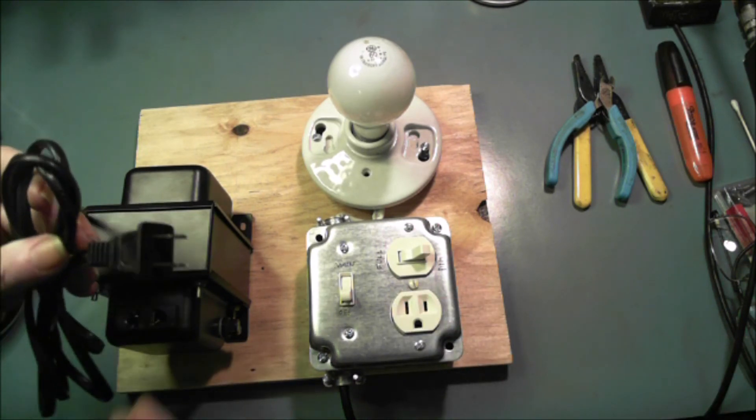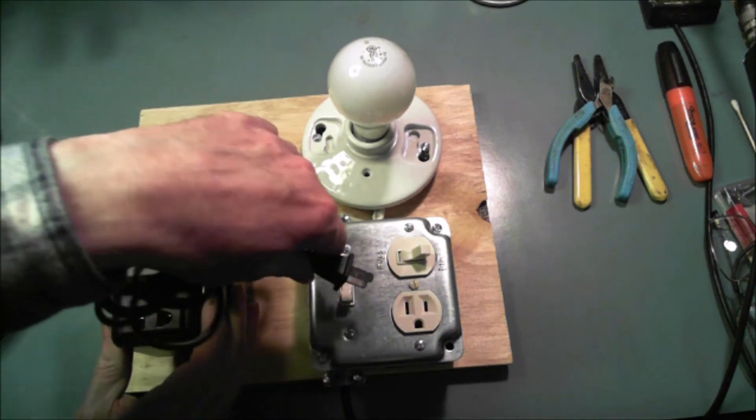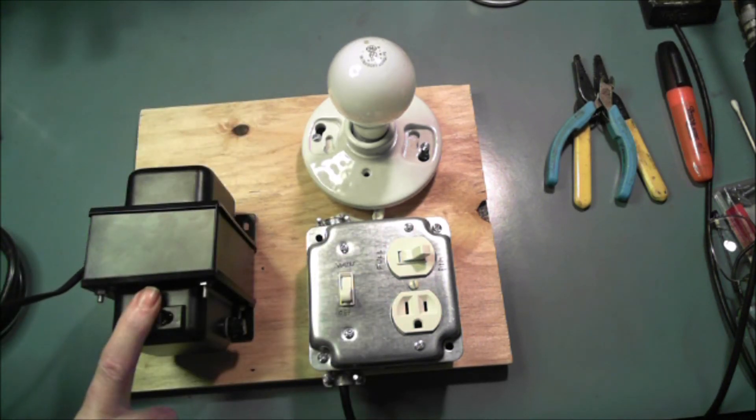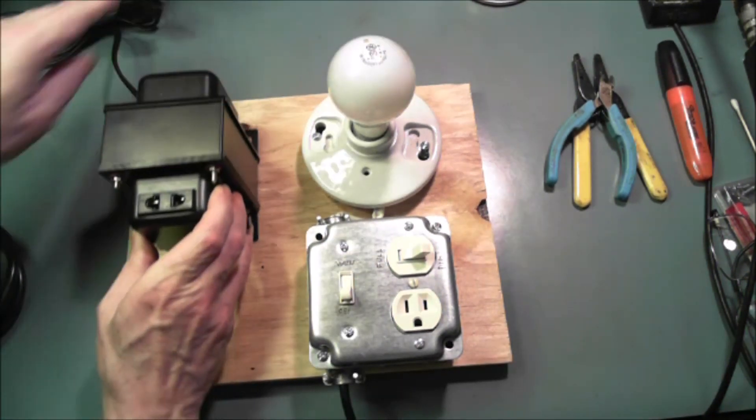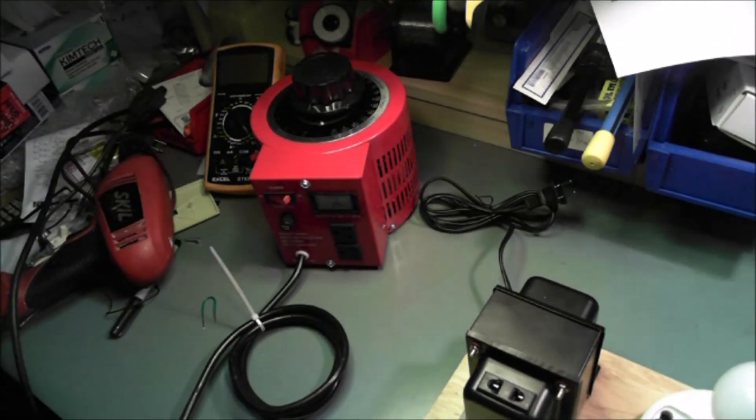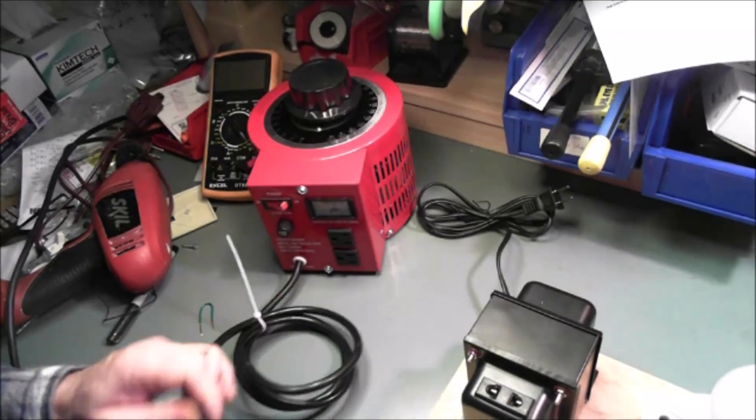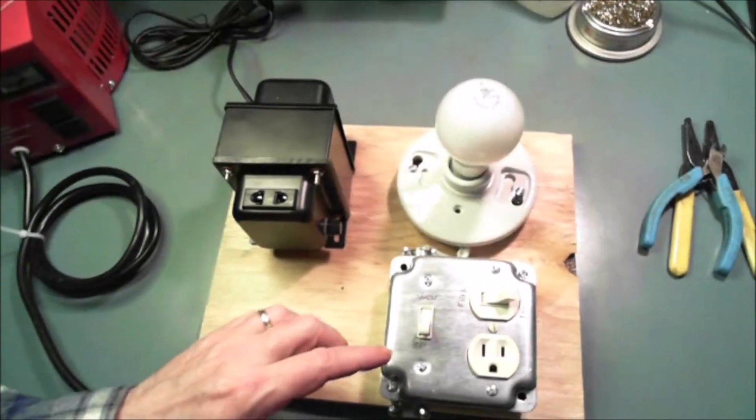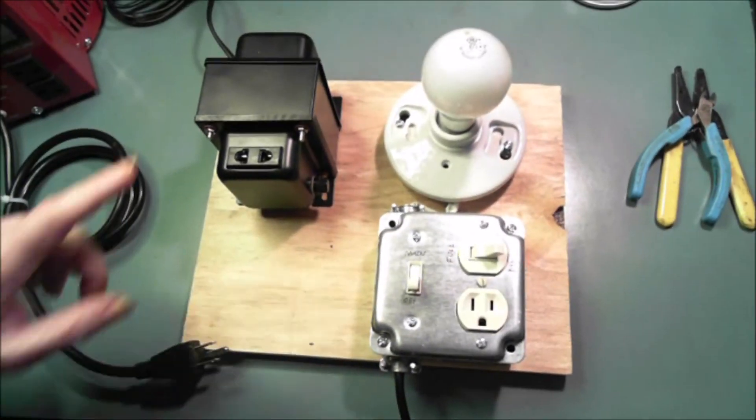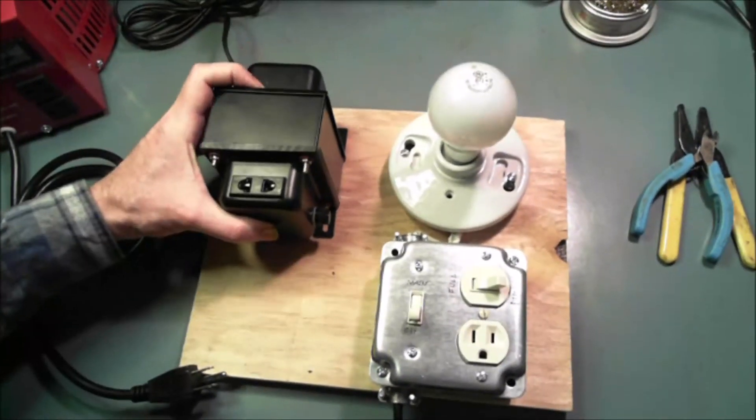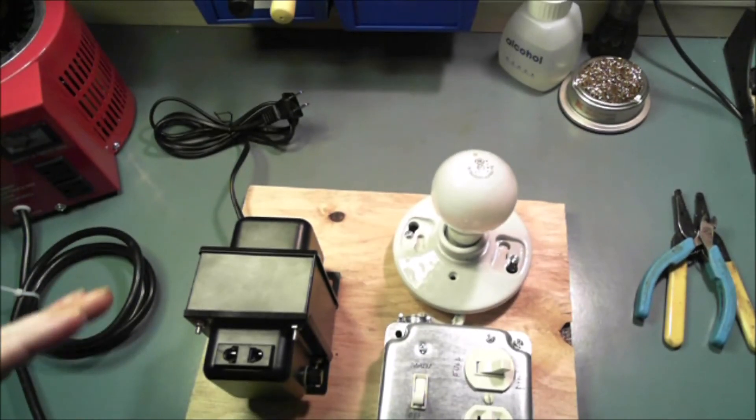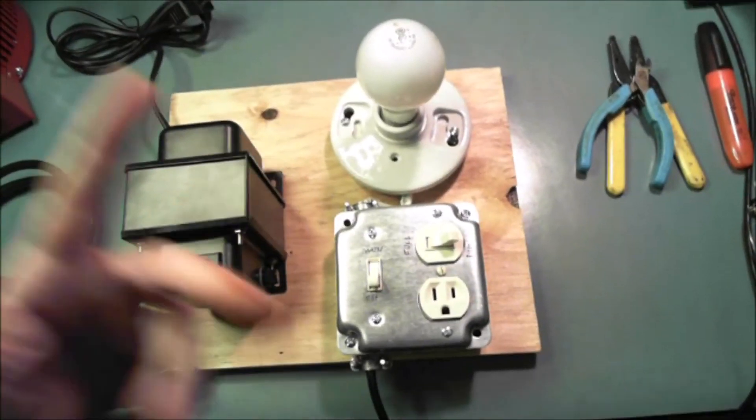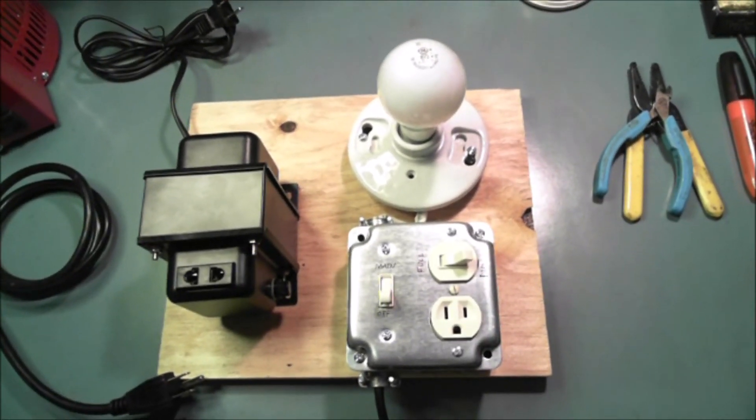This outlet here will accept either the isolation transformer or it will accept the variac right there. More than likely, the variac will plug in to the dim bulb tester and the isolation transformer here will plug into the variac and it's all going to basically just be right there mounted on the wall to keep my bench free.